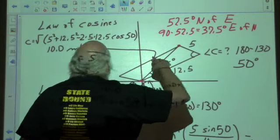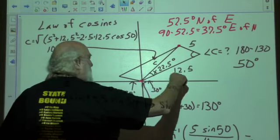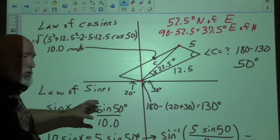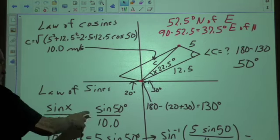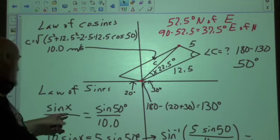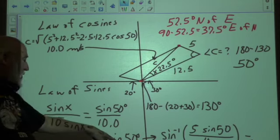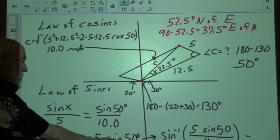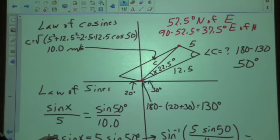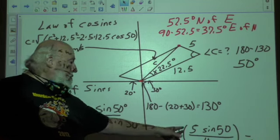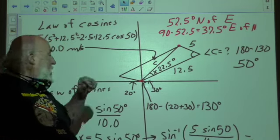Cross multiply and divide this law of sines, and we get 10 sine x equals 5 sine 50, and then we divide by 10, get the sine of x by itself, and then we take the inverse sine and change that from sine of x to x. So x is going to equal this, which is going to be equal to 22.5 degrees.